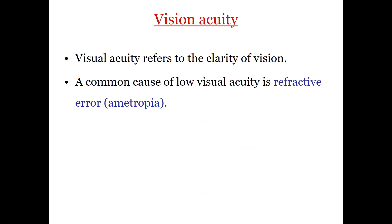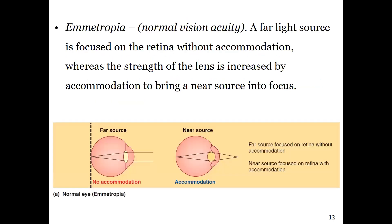We will talk about something called visual acuity, which is the clarity and how accurately we can form the image. It talks about the clarity of vision in a normal way. The major reason for poor visual acuity is a problem with refraction of light, called refractive error or ametropia.